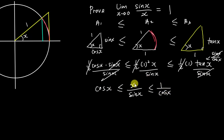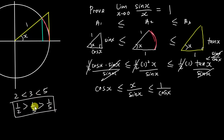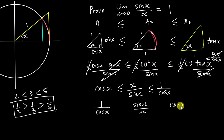Next I want to flip all the terms. In an inequality, if all values are positive, when you take reciprocals you flip the inequality signs. For example, 2 < 3 < 5 becomes 1/2 > 1/3 > 1/5. Applying this here: cos(x) becomes 1/cos(x), x/sin(x) becomes sin(x)/x, and 1/cos(x) becomes cos(x). So after flipping and reversing the inequality signs, I get: cos(x) ≤ sin(x)/x ≤ 1/cos(x)... which becomes cos(x) ≤ sin(x)/x ≤ 1 after the flip.